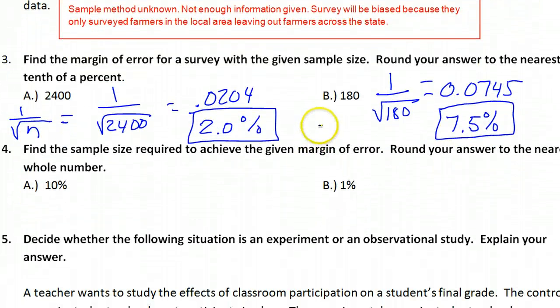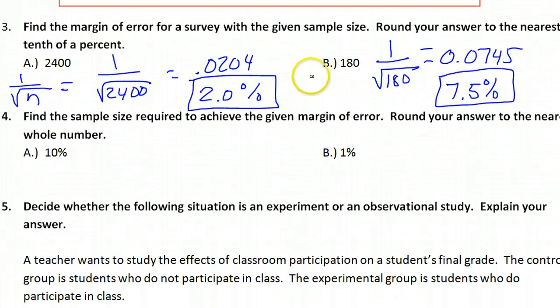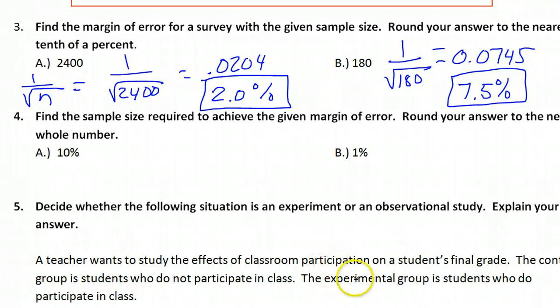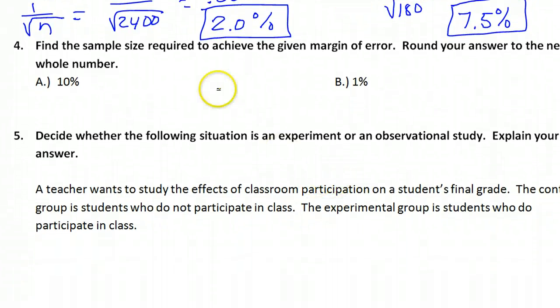In other words, the more people you sample, the more accurate your estimate will be, which makes sense. Number four. Find the sample size required to achieve the given margin of error.